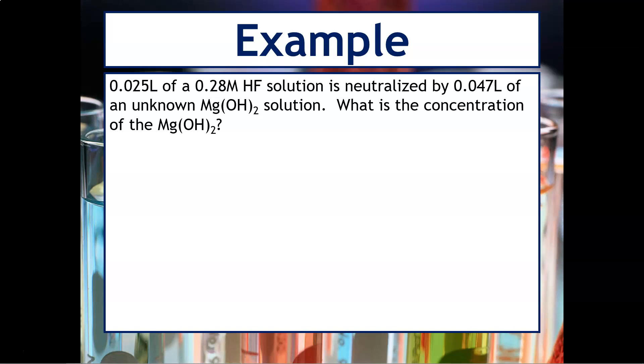0.025 liters of a 0.28 molar hydrofluoric acid solution is neutralized by 0.047 liters of an unknown magnesium hydroxide solution. We want to know what is the concentration of the magnesium hydroxide. Okay, there's a lot going on here. So let's first do our balanced equation. That was the first step. So we're going to take the hydrofluoric acid, react it with magnesium hydroxide, and we get water and our salt, which is magnesium fluoride. We're then going to balance the equation. I find changing water into HOH makes that a lot easier. So we're going to put a 2 in front of the HF, a 2 in front of the water, and then everything else is 1s. Okay, so we're good with that.